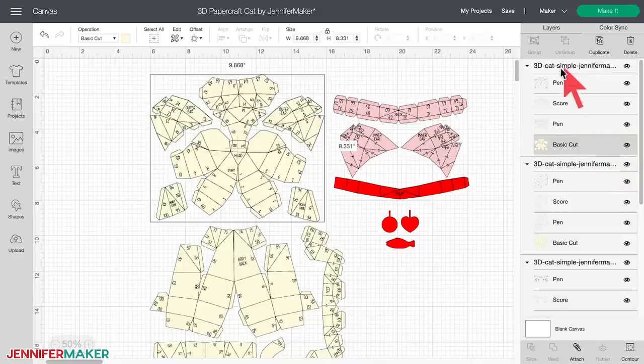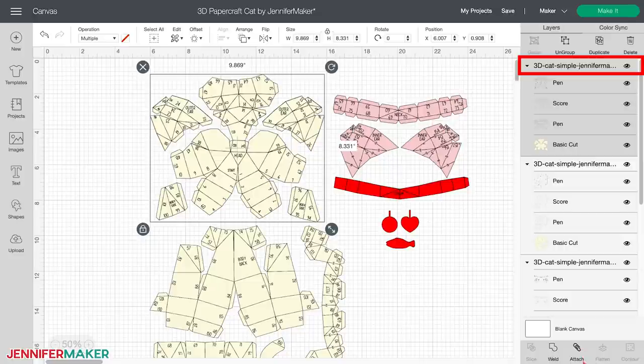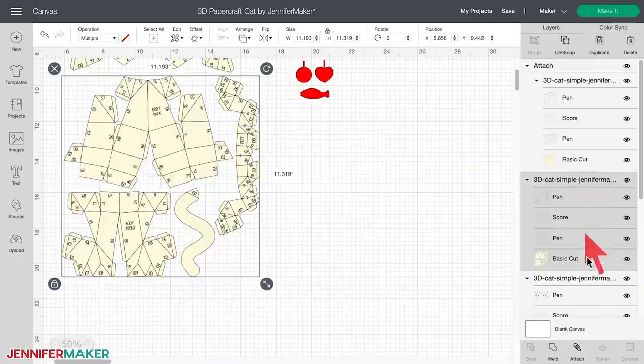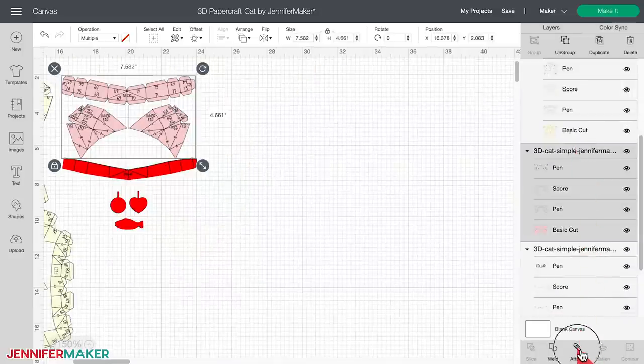Now select each group by clicking on the layer line with a little arrow that you see here and attach the pen and score layers to the base layer by clicking on attach down here in the bottom right. Do this for all of your groups.